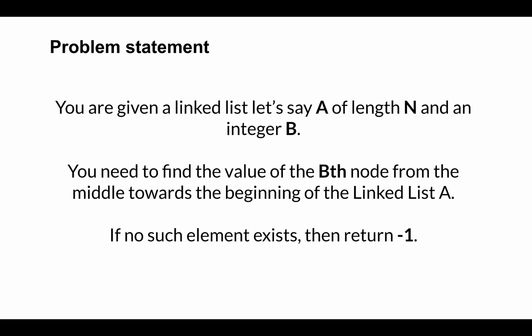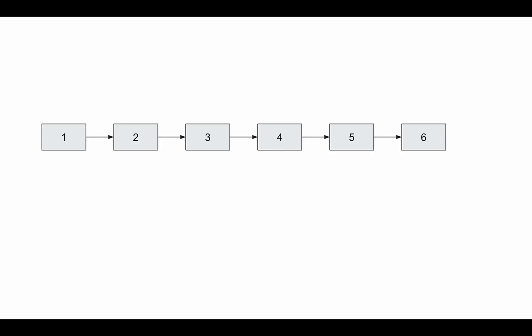What is the value of the Bth node from the middle of the linked list towards the beginning? If no such element exists, you have to return minus one. Let's understand this better. Assume the linked list given as input is 1, 2, 3, 4, 5, 6 — six elements. The length N is six and the value of B is two. You have to find the Bth node from the center towards the beginning.